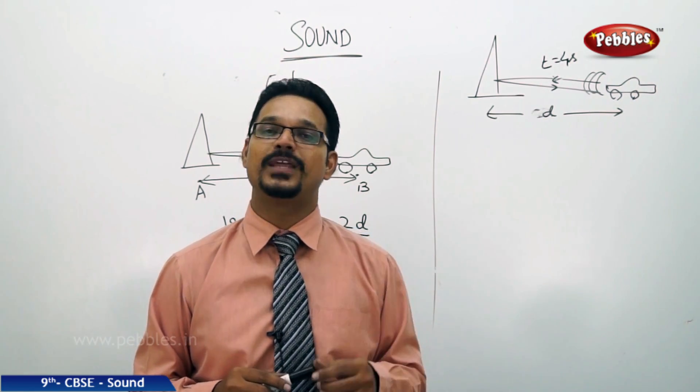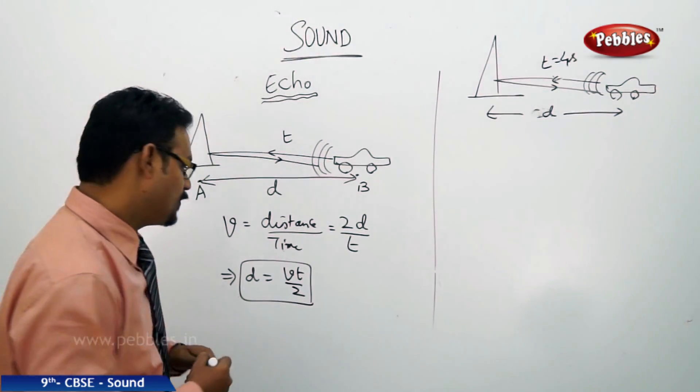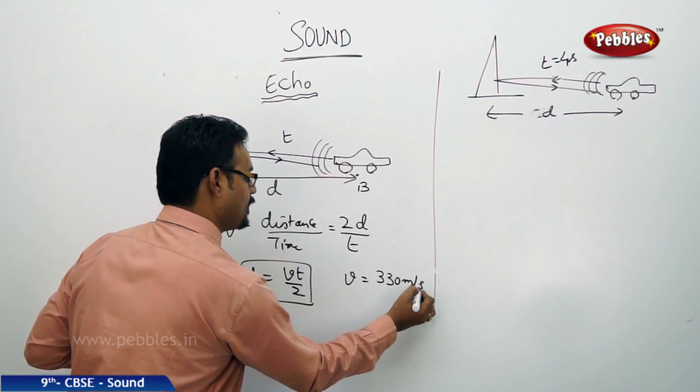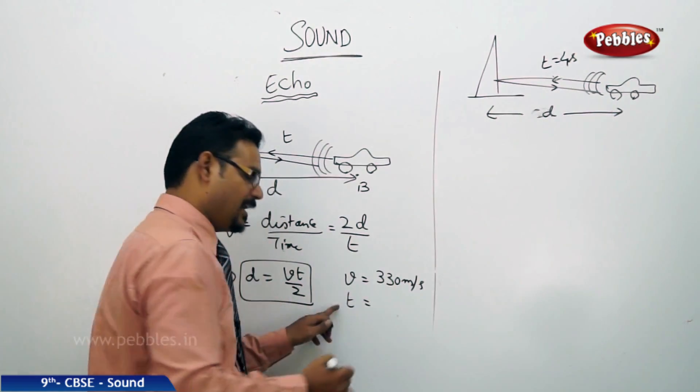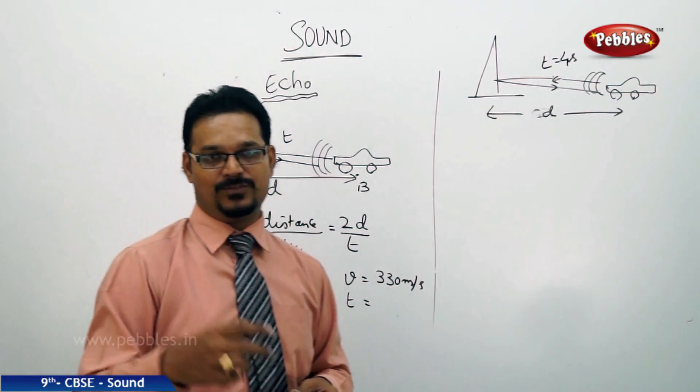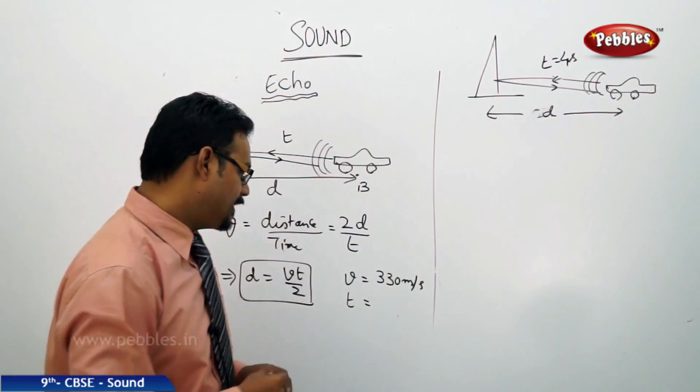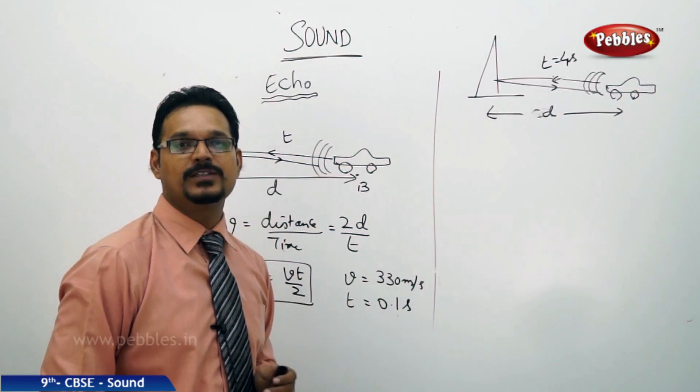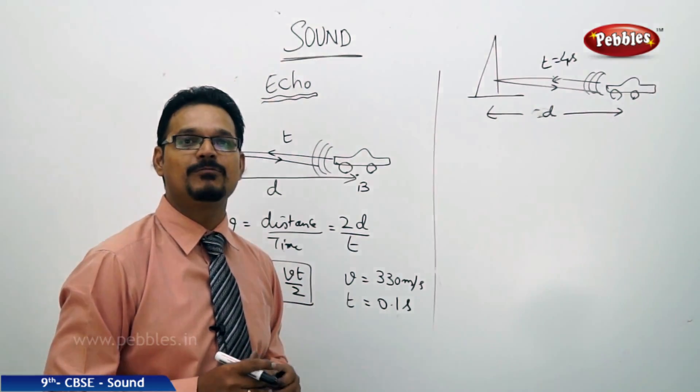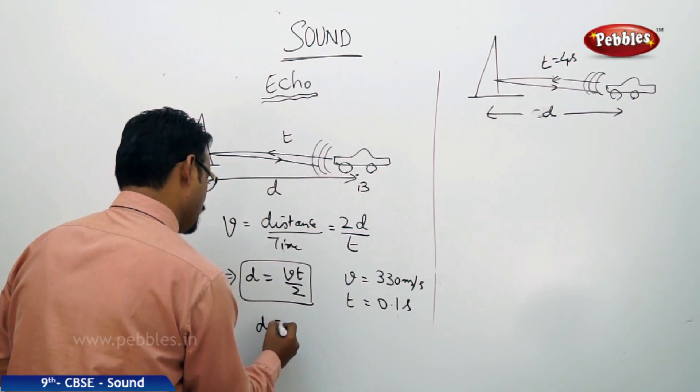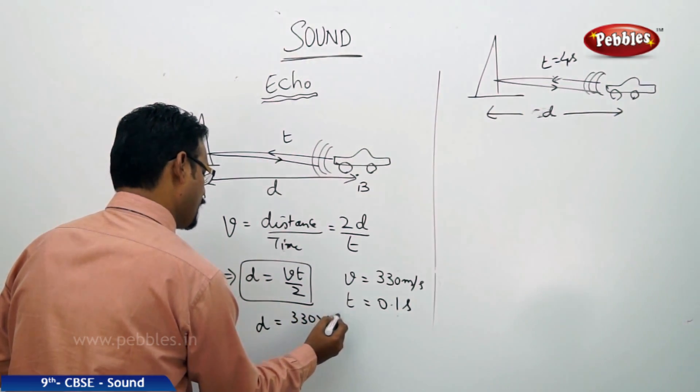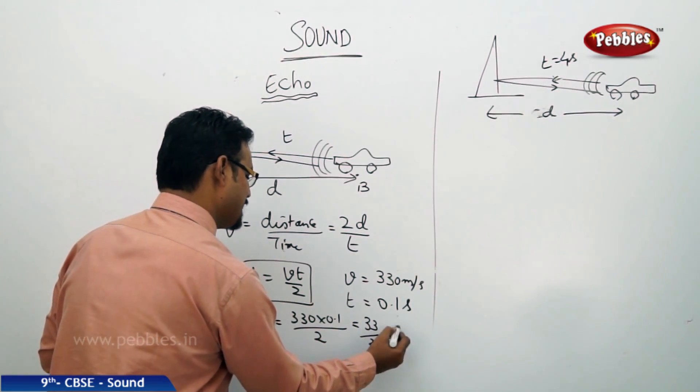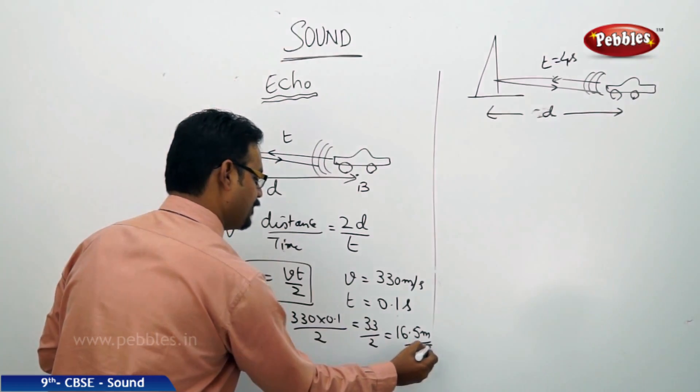Mathematically, what is the minimum distance required to produce an echo? d equals vt by 2. Speed of sound, let us take 330 meters per second. Time - this is experimentally found by scientists - is 0.1 second minimum. Then d equals 330 into 0.1 by 2, which is 33 by 2, which is 16.5 meters.